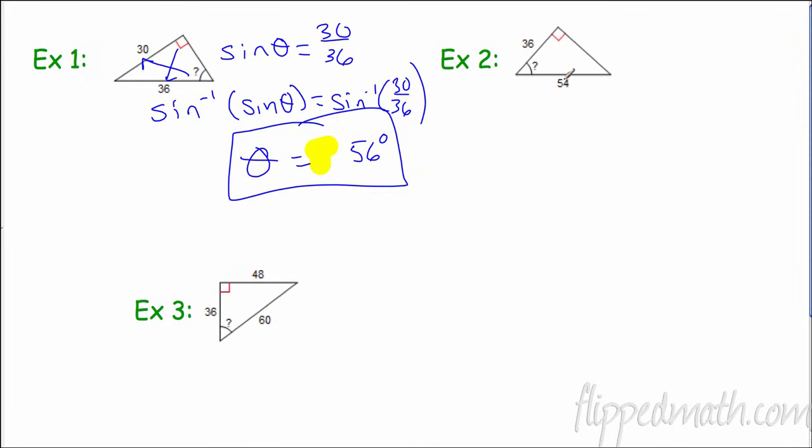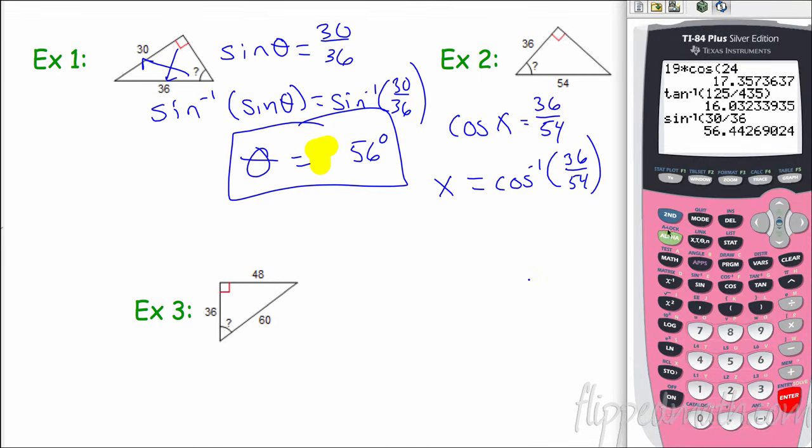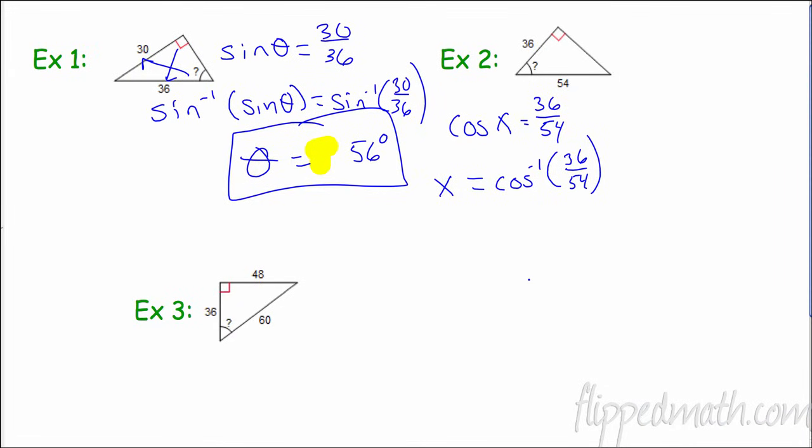Let's do this one. We have adjacent and hypotenuse - that's cosine. So cosine x equals 36 over 54. So I'm going to undo it by doing the inverse cosine of 36 over 54. Plug it in, so we get second cosine, 36 divided by 54, and we get 48.1, so we'll call it 48. So x is 48 degrees.